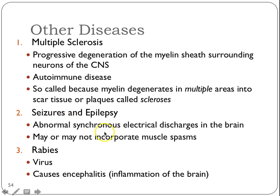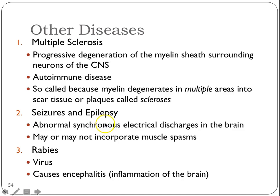Seizures and epilepsy — again, think of it as an electrical storm in the brain. It may or may not incorporate muscle spasms. For most of us, an epileptic seizure is someone shaking and falling to the ground, but it doesn't always mean that. Depending on which brain region has the electrical storm — if it's the region responsible for interpreting sounds, you may have auditory hallucinations; if it's the visual region, you might see things or be unable to interpret what you see. It may not have anything to do with muscle spasms.